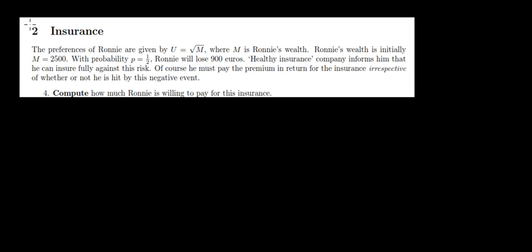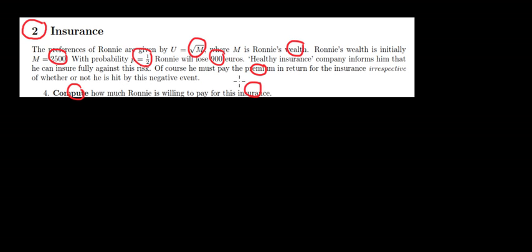Let's have a look at question 2 now. We have preferences given by the utility function √m, where m is our wealth. Initially we have 2,500 euros, and with probability one-half we can lose 900 euros. We could buy insurance that insures us against this risk of losing 900 euros, for which we pay a premium. How much are we willing to pay for this insurance?